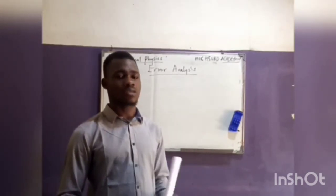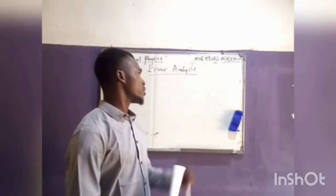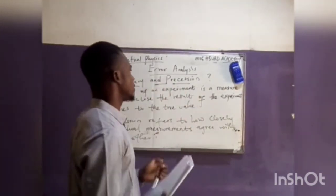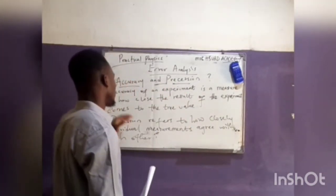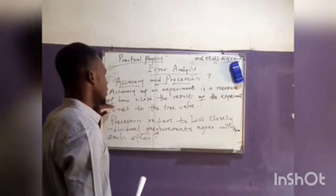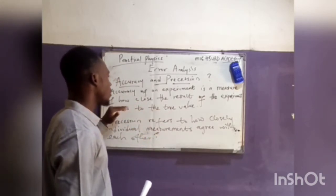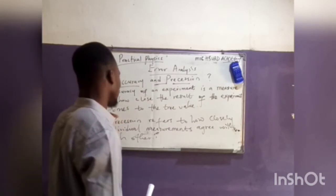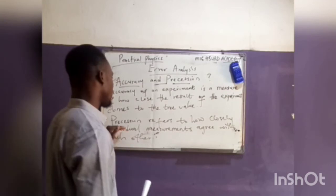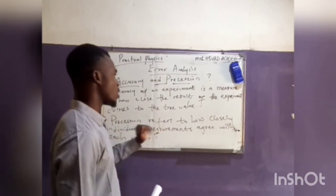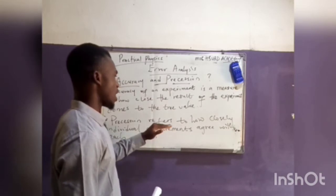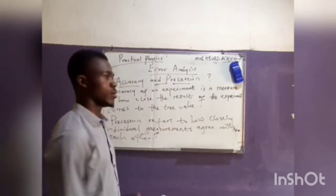Now, accuracy and precision — let us see the difference between these two. The accuracy of an experiment is a measure of how close the result of that experiment comes to the one true value, while precision refers to how closely individual measurements agree with each other.